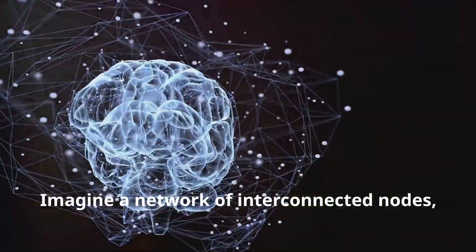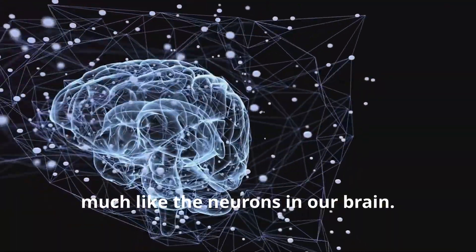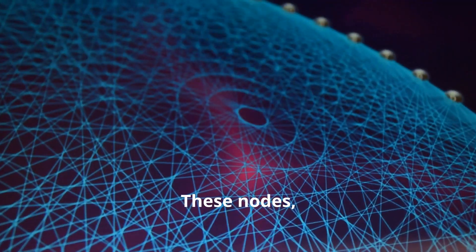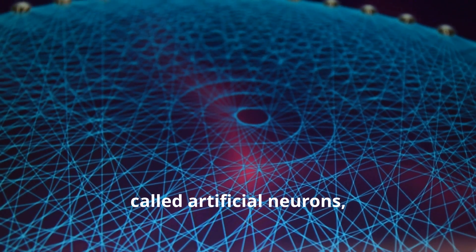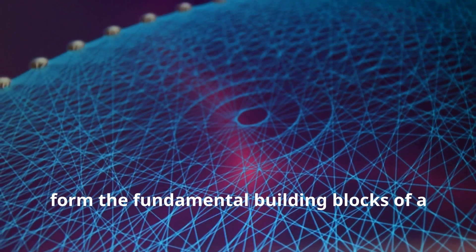Imagine a network of interconnected nodes, much like the neurons in our brain. These nodes, called artificial neurons, form the fundamental building blocks of a neural network.